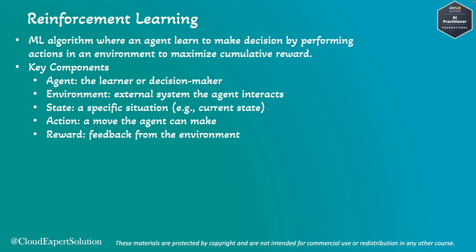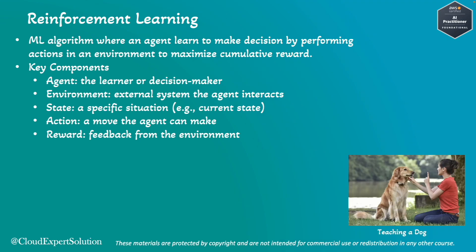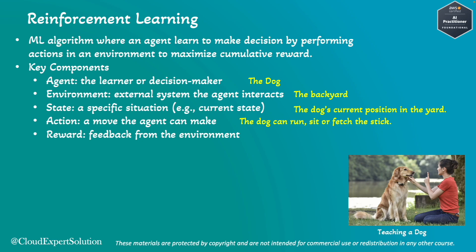Let me break down reinforcement learning using a real-life scenario. Imagine you want to teach a dog to fetch a stick. In this case, the agent is the dog — the learner. The environment is your backyard where you are training the dog. The state is the dog's current position in the yard. The actions are: the dog can run, sit, or fetch the stick. The reward is a treat given to the dog if it fetches the stick correctly.